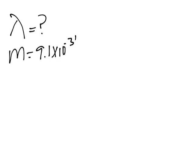So we want the wavelength of the electron. We know that the mass will be 9.1 times 10 to the negative 31 kilograms. That's the mass of the electron.